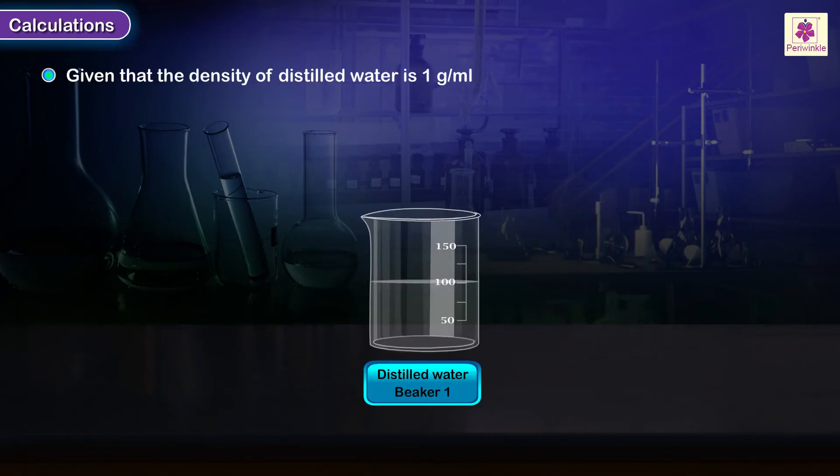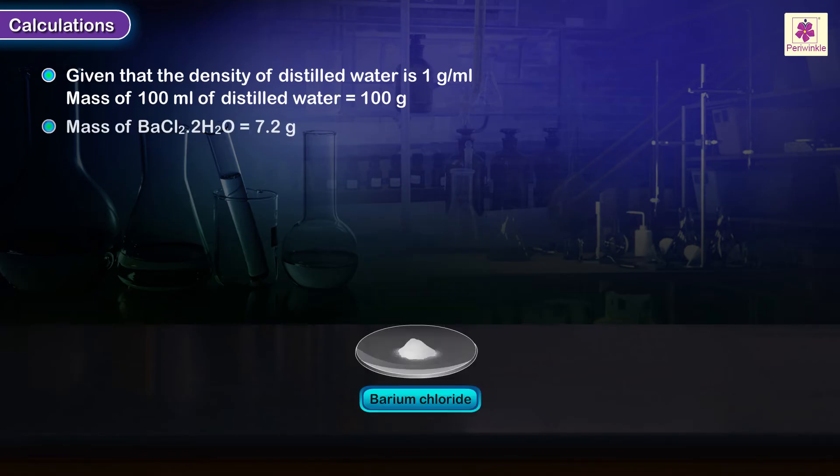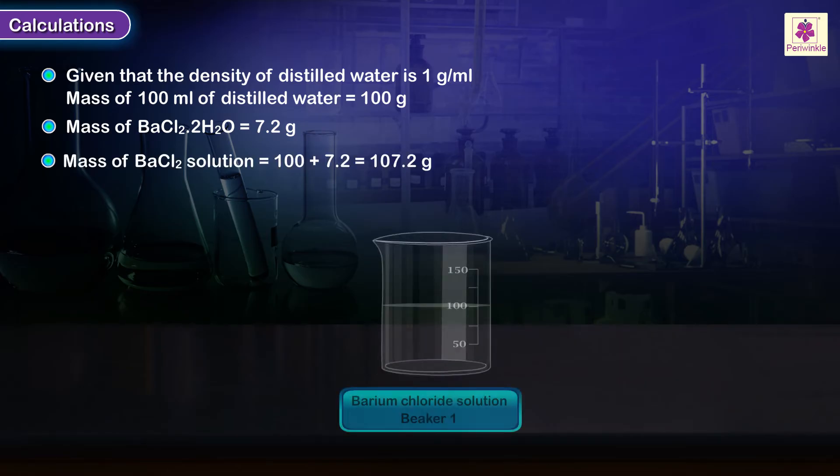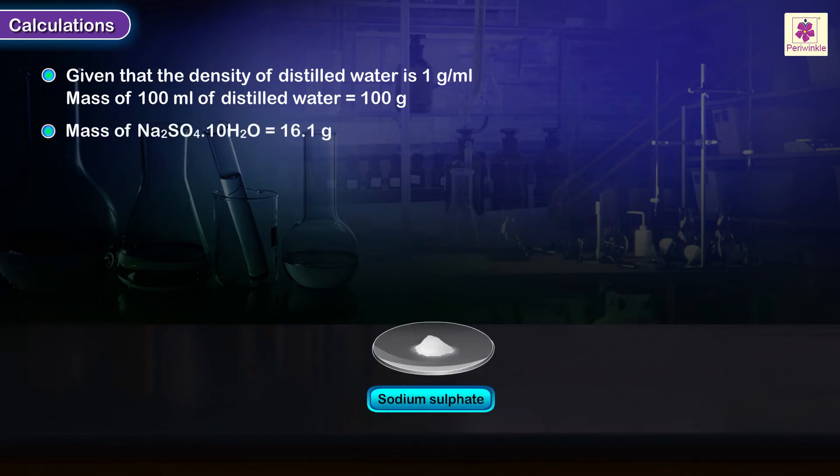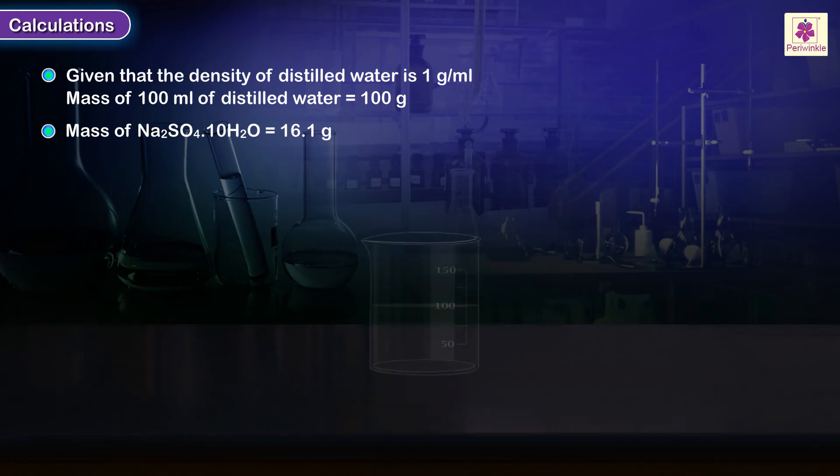Calculations: Given that the density of distilled water is 1 gram per milliliter, mass of 100 ml of distilled water equals 100 grams. Mass of barium chloride equals 7.2 grams. Mass of barium chloride solution equals 107.2 grams. Mass of sodium sulphate equals 16.1 grams. Mass of sodium sulphate solution equals 116.1 grams.